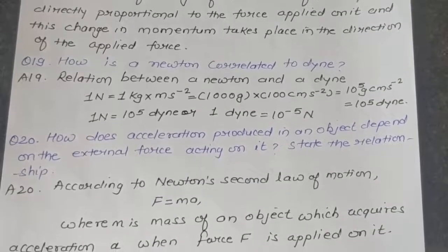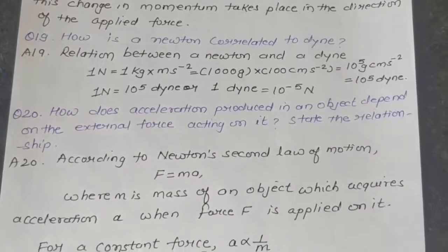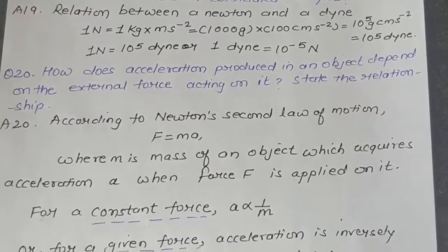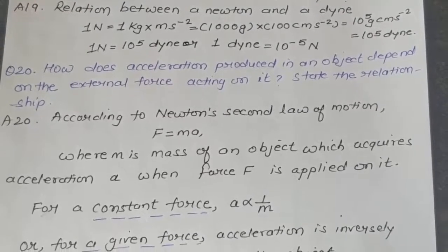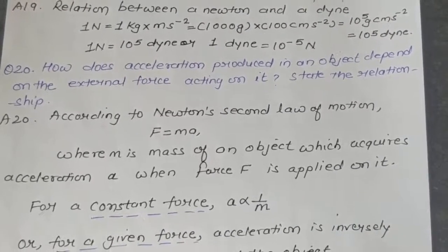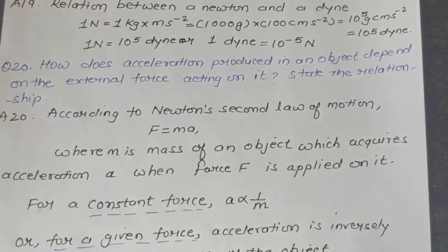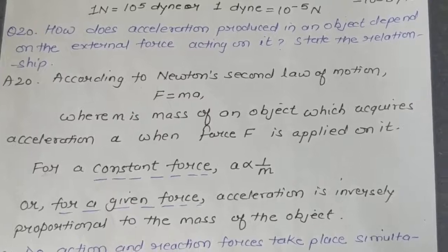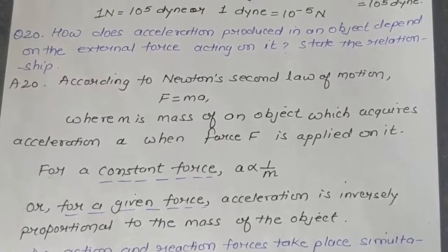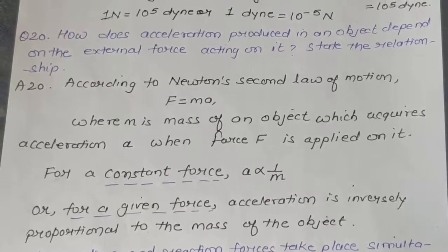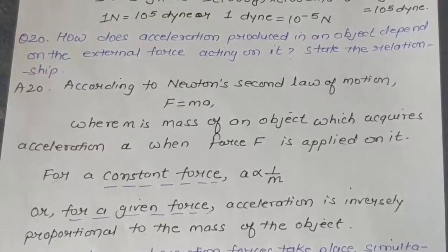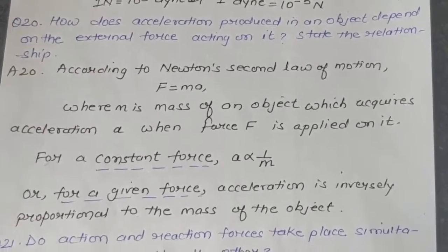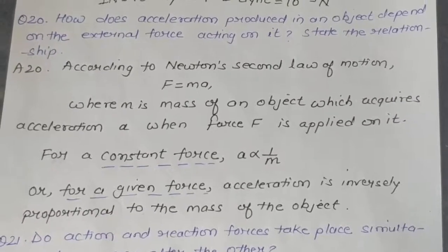Question 20: How does the acceleration produced in an object depend on the external force acting on it? Answer: According to Newton's second law of motion, F = ma, where m is the mass of the object and a is the acceleration when force F is applied. For a constant force, acceleration is inversely proportional to the mass of the object: a ∝ 1/m.